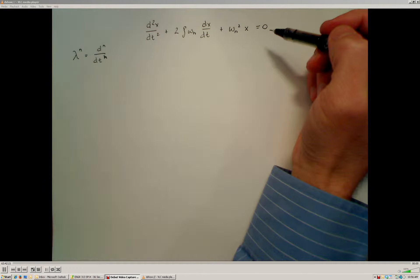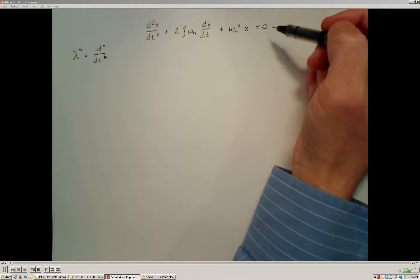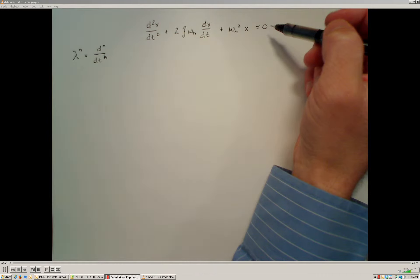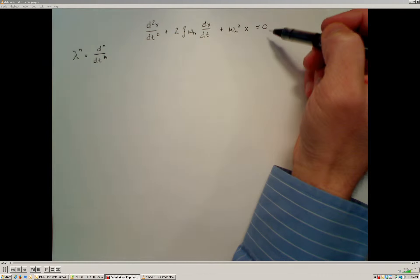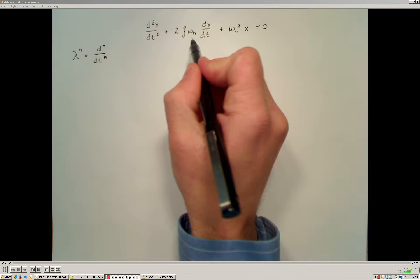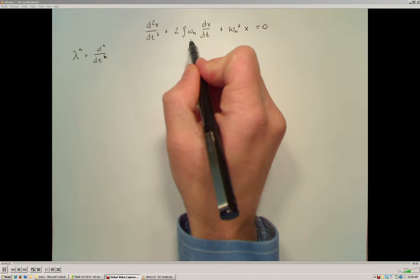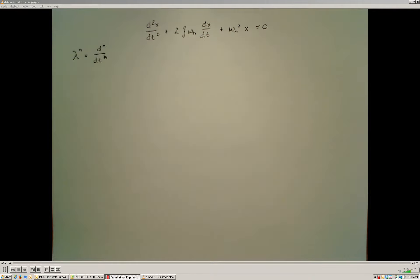We've derived the general second-order model for a second-order system. Right here I've written the second-order model in terms of the damping ratio and the undamped natural frequency. Now we have to turn our attention to solving this differential equation so we know the different behaviors of second-order systems.